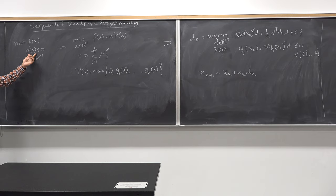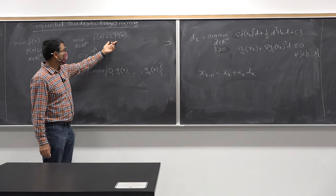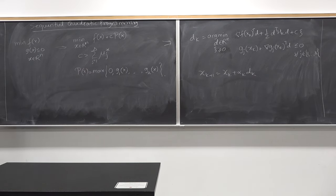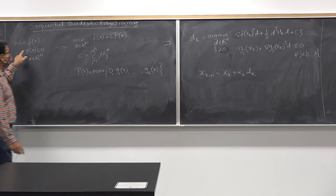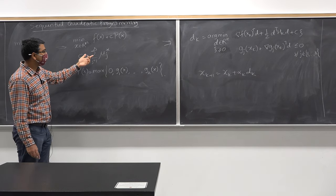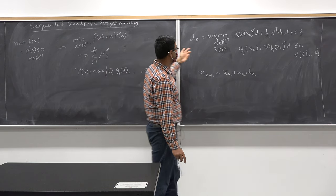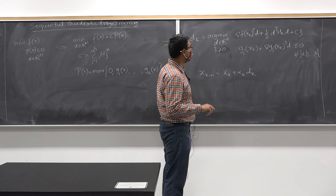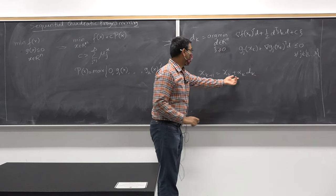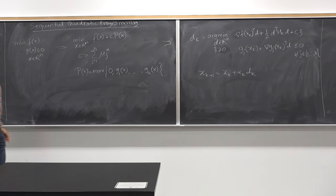Starting from an inequality constraint minimization problem — and even if you have equality constraints you can convert them to inequality constraints — you come up with a penalty function. Under the condition that c is greater than the sum of Lagrange multipliers, the optimal solution to the penalized problem is also optimal for the original. I solve a sequence of quadratic programs, pick alpha_k by some rule, and this entire process is known as sequential quadratic programming — a very powerful algorithm used in optimization for embedded systems.